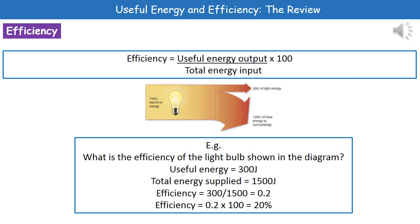To calculate efficiency, all we need to do is: useful energy output divided by total energy input, times 100. You don't have to memorise the equation because it's on page 2 of your exam booklet. So if asked to calculate the efficiency of something, flip back to page 2, find the efficiency calculation, and substitute in the numbers.